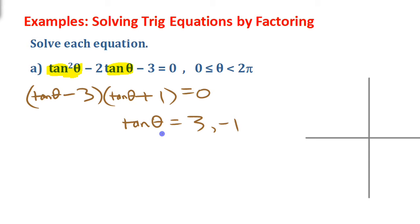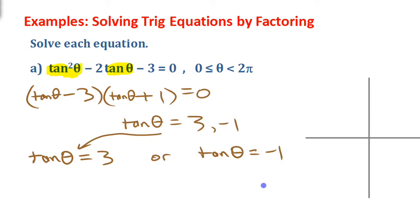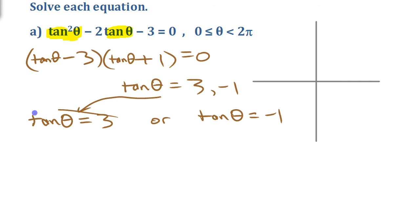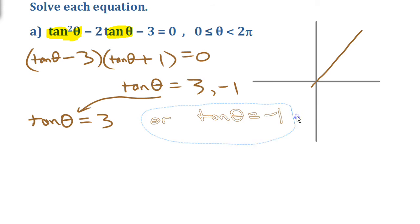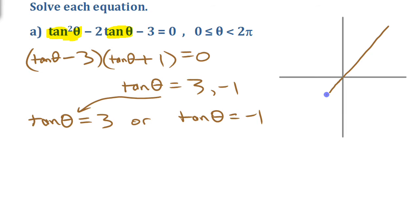At this point we're going to split this apart and say we need to actually find the values of theta. We have tan theta equals 3 or tan theta equals negative 1. Let's tackle one at a time — first where tangent is positive. That's going to give us two angles, one in quadrant 1 and one in quadrant 3. The other case where tangent is negative will be in quadrant 2 and quadrant 4, and they're going to have different reference angles.